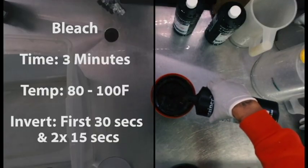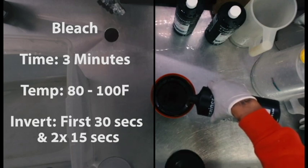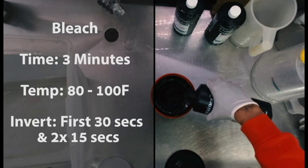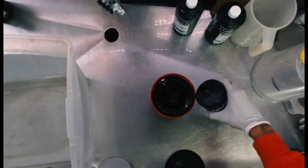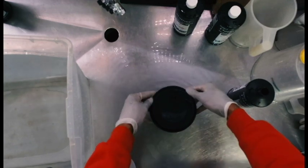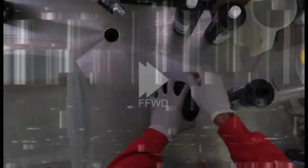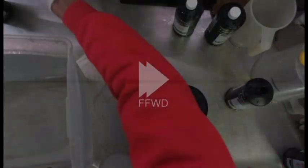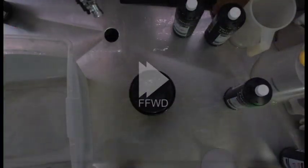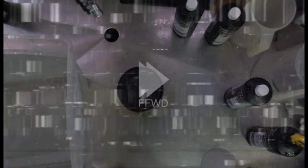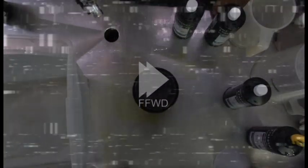Once we exchange the water three times, we're going to pour in our bleach. Our bleach is going to be for three minutes. The temperature should be around 80 to 100 Fahrenheit. And within that first minute, our 30 seconds is going to be inversions. And similar to the developer after our first minute is done, the last two minutes is going to be 15 seconds of inversions twice.